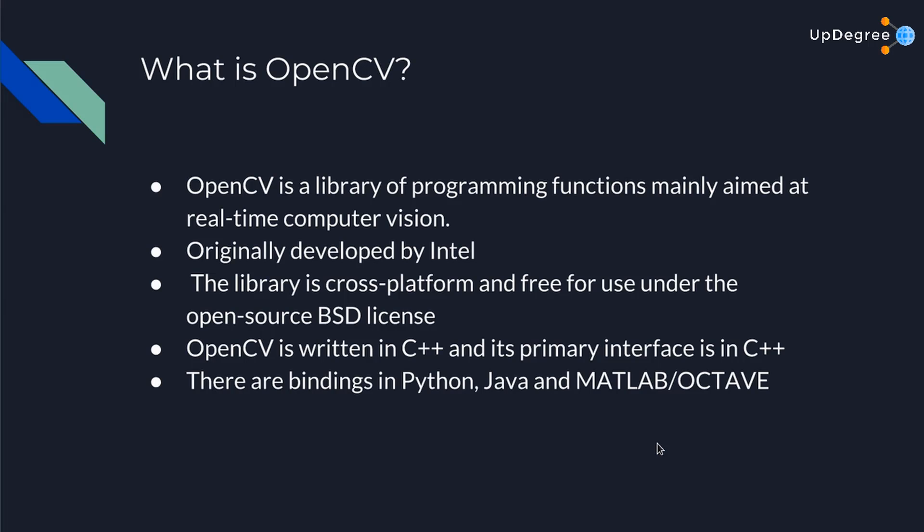OpenCV is an open source software. Open source means that we have access to the source code, and if we want to change OpenCV or add new features to it, we can just download the source code and make changes as we see fit. That is why it is called open source with a BSD license.